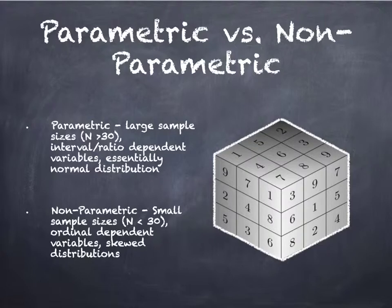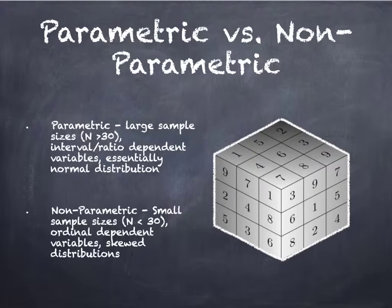As a reminder on parametric versus non-parametric: a parametric test usually has large sample sizes — over 30 is the key standard — an interval or ratio dependent variable, and typically an essentially normal distribution. If you have a highly skewed distribution, students should be doing a non-parametric t-test. A non-parametric test has small sample sizes (n less than 30), ordinal dependent variables, and a skewed distribution — something strongly positively or negatively skewed.